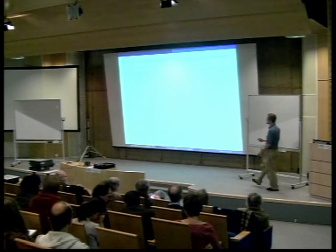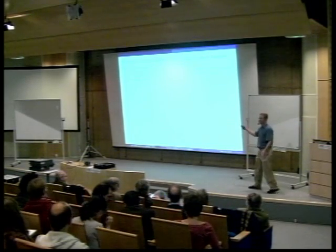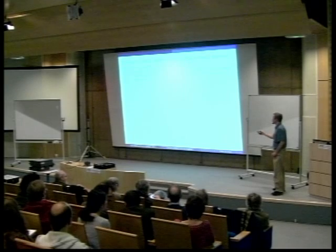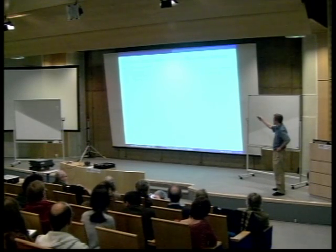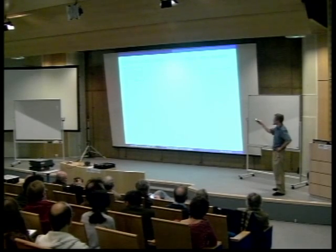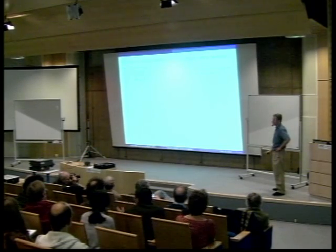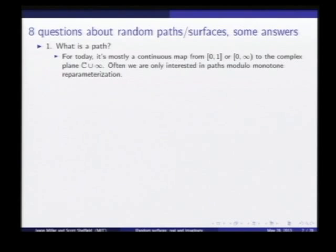So to begin with, what is a path? For today, I mostly am going to mean a continuous map from either [0,1] or [0,∞) to the complex plane C union infinity. And in many cases, we'll be interested only in paths modulo monotone reparametrization.